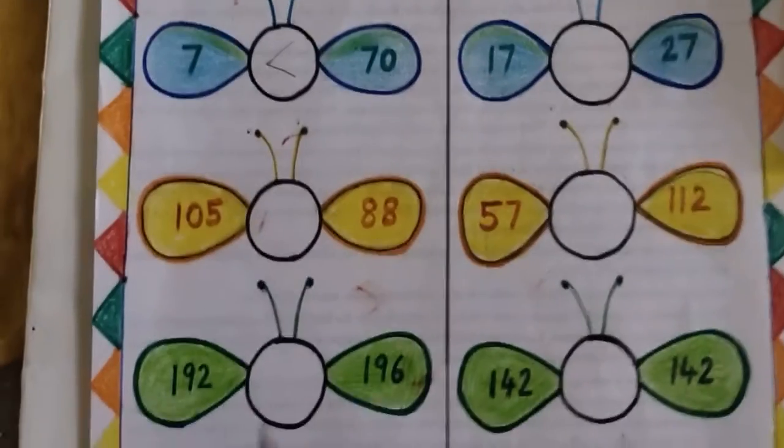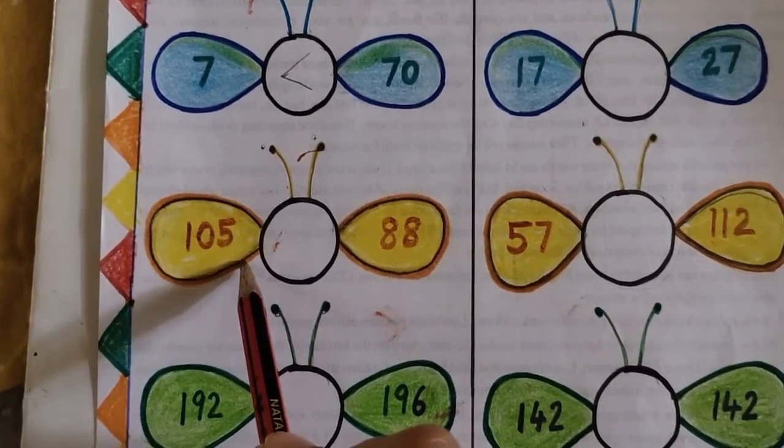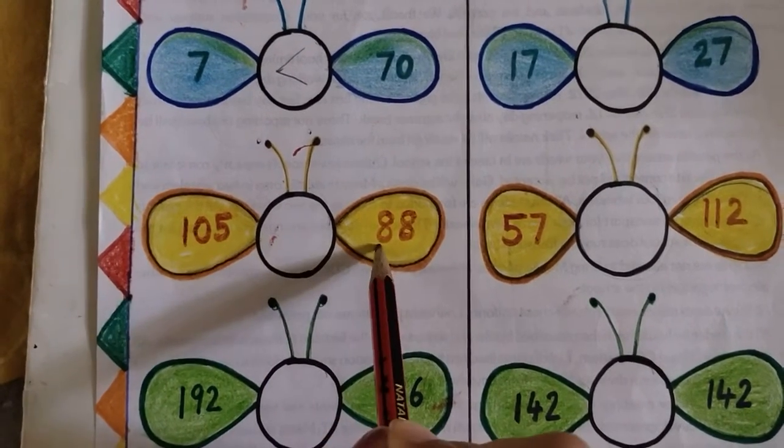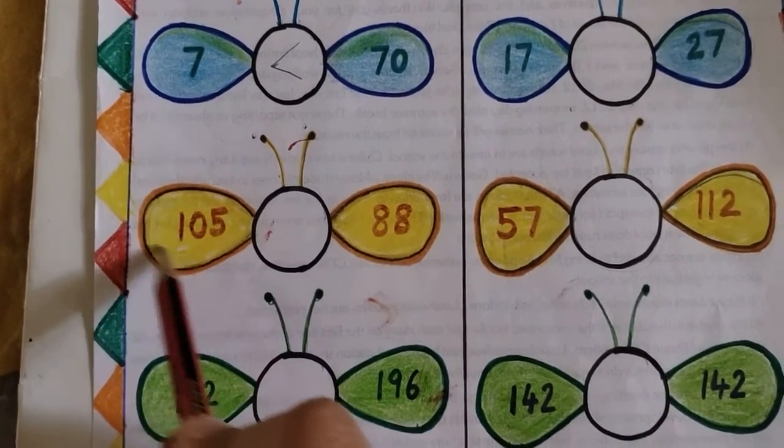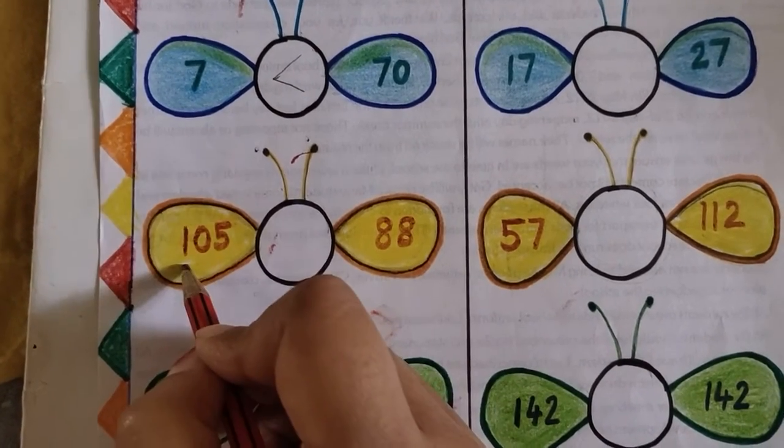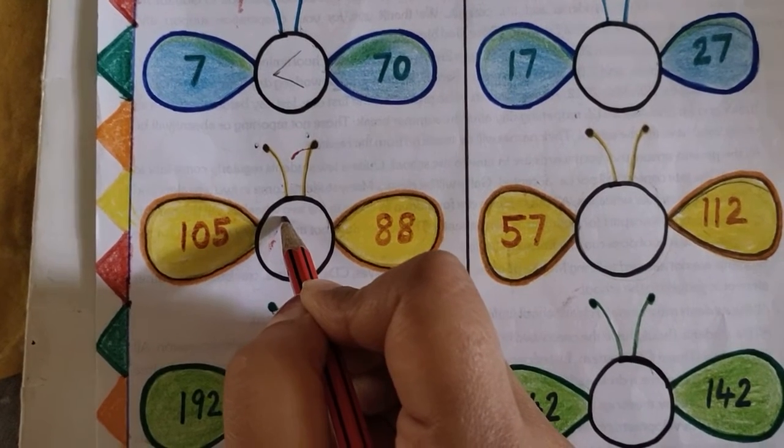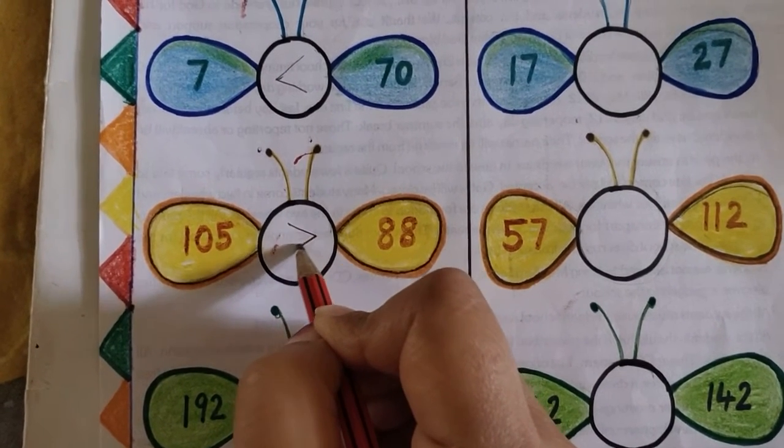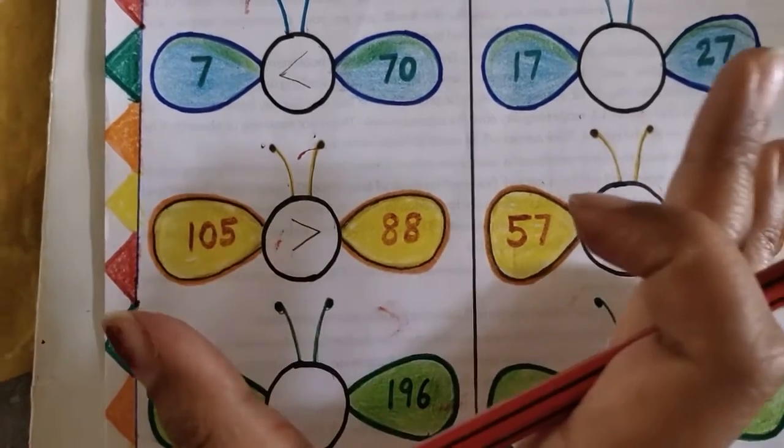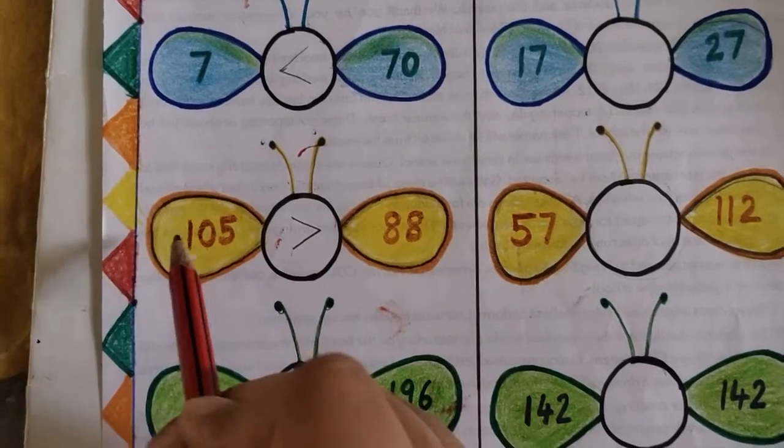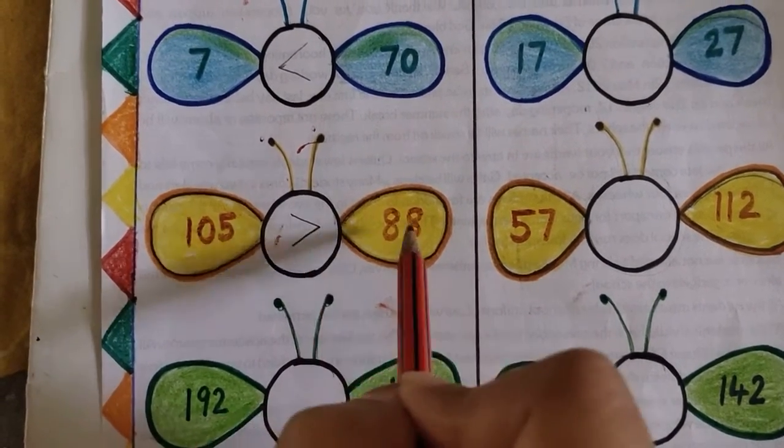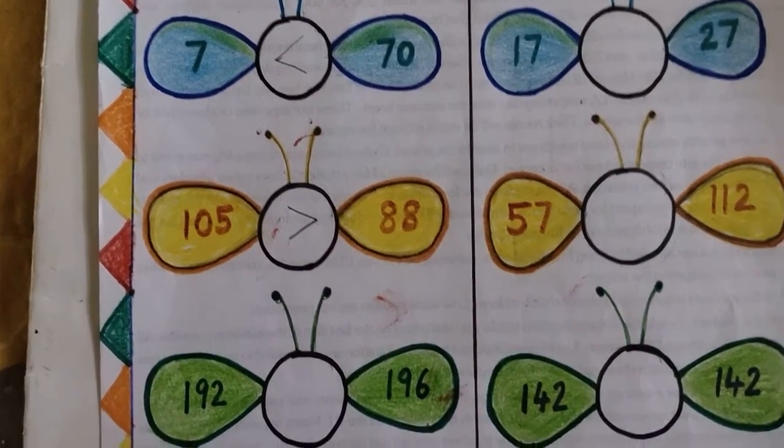Coming to next example, we have 105 and 88. So we have a 3 digit number and a 2 digit number. The 3 digit number is greater than 2 digit number. So which sign will we put? The open mouth will come this side because this is greater. We will require open mouth to eat more number and we will require smaller mouth to eat less number.